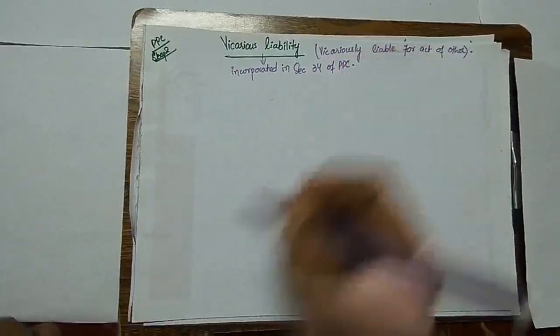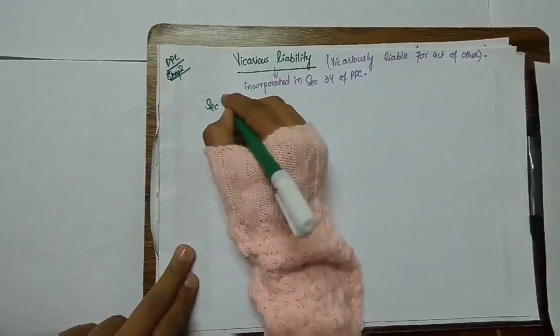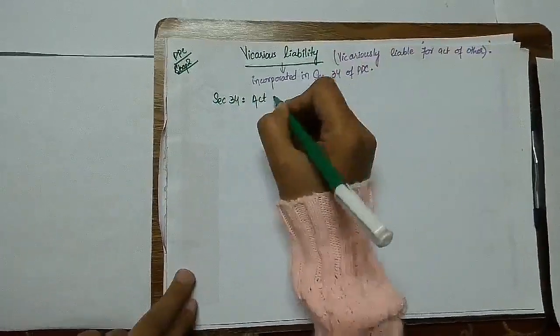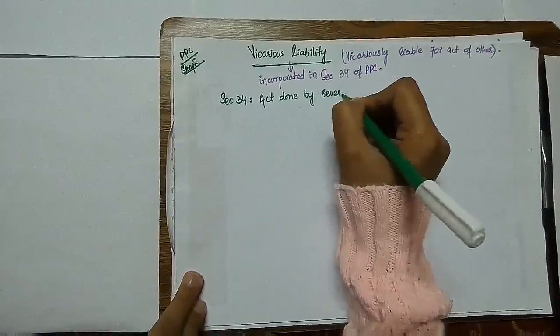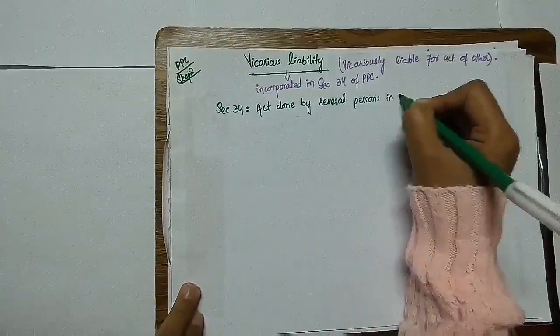So let's see what does section 34 say. Section 34 says act done with the help of several persons in furtherance of common intention.